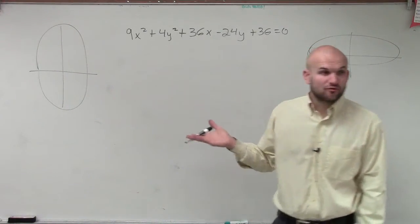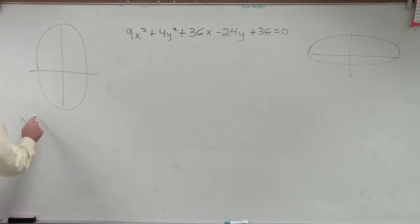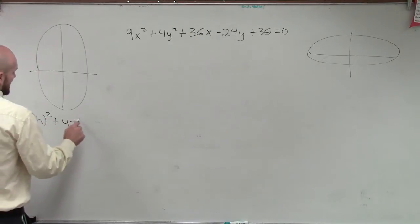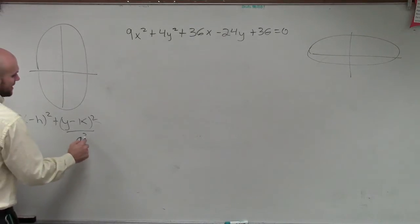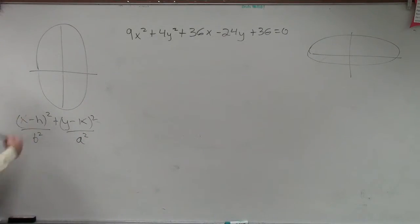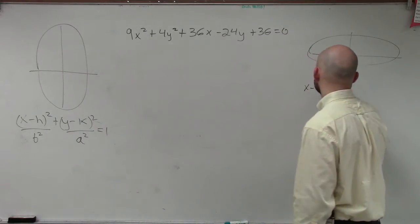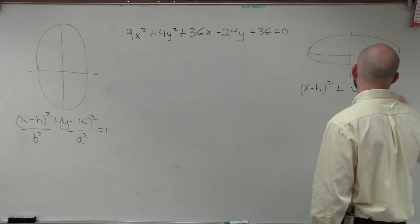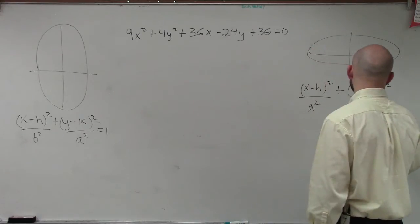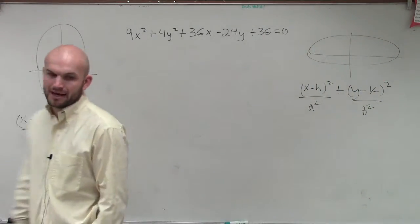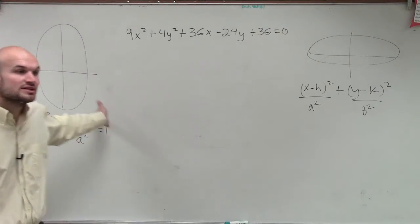For each one of these, we have different formulas. For a vertical one, it's (x - h)² / b² + (y - k)² / a² = 1, where a² is under the y and b² is under the x. The only difference if it's horizontal is my a² is going to be under my x, and my b² is going to be under my y.